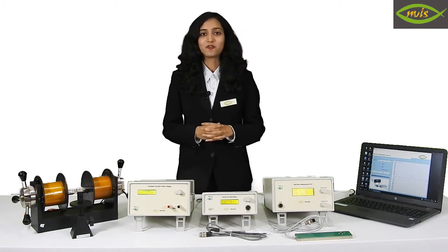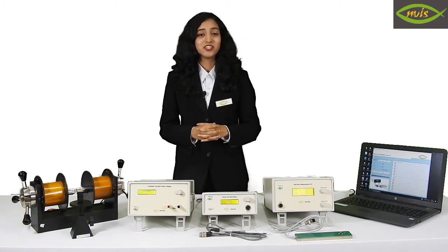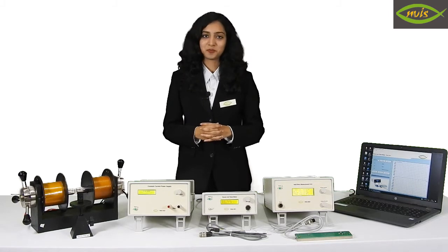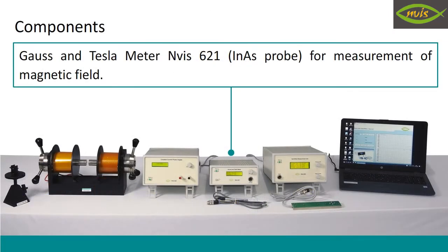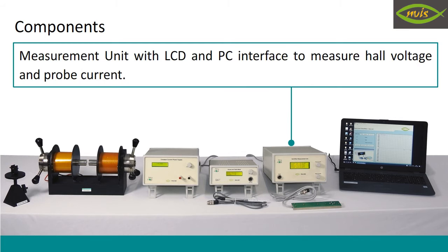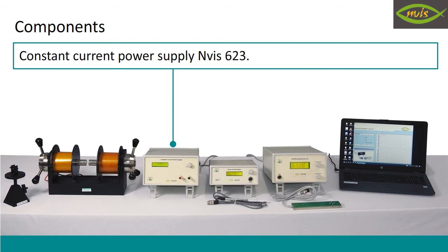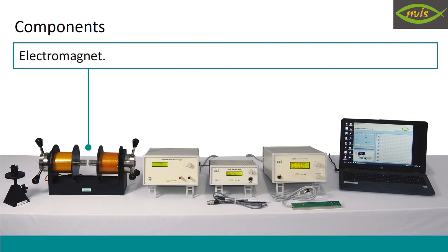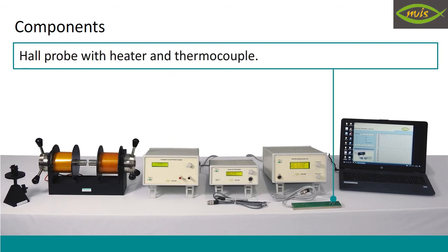Let us look at the setup of Envis 6101, which consists of the following components: a Gauss and Tesla meter with LCD and Indium Arsenide probe for measurement of magnetic field; a measurement unit with LCD to measure Hall Voltage, probe current, heater current and temperature; a constant current power supply with LCD; an electromagnet and Hall probe with heater and thermocouple.